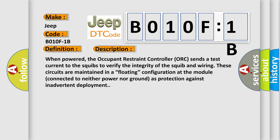When powered, the occupant restraint controller ORC sends a test current to the squibs to verify the integrity of the squib and wiring. These circuits are maintained in a floating configuration at the module, connected to neither power nor ground as protection against inadvertent deployment.